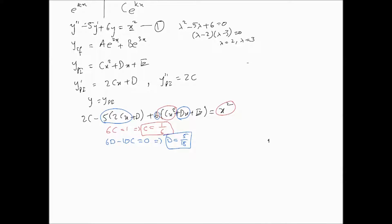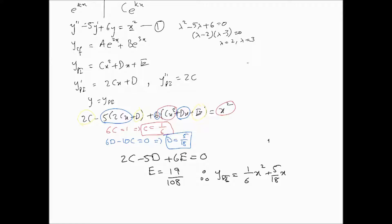For the constant terms: 2C - 5D + 6E = 0. With C = 1/6 and D = 5/18, we find E = 19/108. Therefore the particular integral is ypi = (1/6)x² + (5/18)x + 19/108.